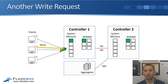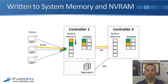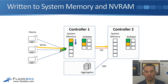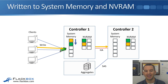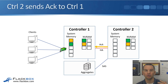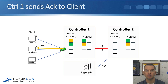Then we have another write request come in from another client — yellow data this time. That hits Controller 1, and it gets written into system memory and NVRAM on Controller 1, and into NVRAM on Controller 2. When it comes into Controller 1, it goes into the top slot in system memory, and all the existing data gets bumped down a slot. Controller 1 mirrors that over to Controller 2 over the HA connection. Once it's written into NVRAM on Controller 2, Controller 2 sends the acknowledgement back, then Controller 1 sends the acknowledgement back to the client.